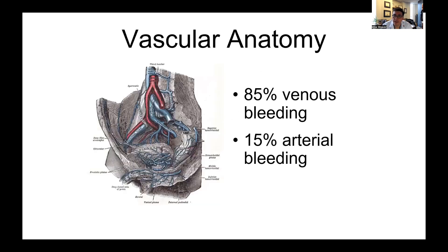Junto a la anatomía ósea está la anatomía vascular, y es por eso que estas lesiones son potencialmente mortales. Hay un suministro de sangre muy rico corriendo a través de la cara posterior de la pelvis: las arterias y venas ilíacas, y además hay un rico plexo venoso que rodea el sacro posterior llamado plexo de Watson y el suelo pélvico. Cuando hay una ruptura significativa de la pelvis, estos vasos pueden desgarrarse y hay mucho sangrado. La mayoría de las hemorragias tienden a ser venosas, pero también puede haber hemorragias arteriales.